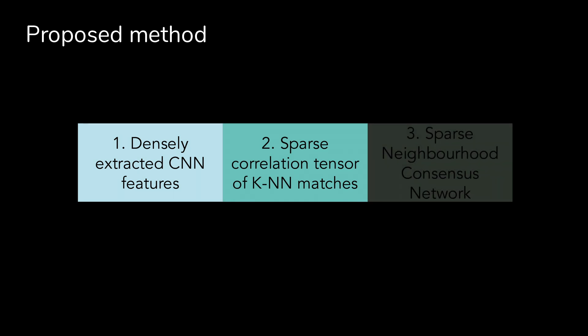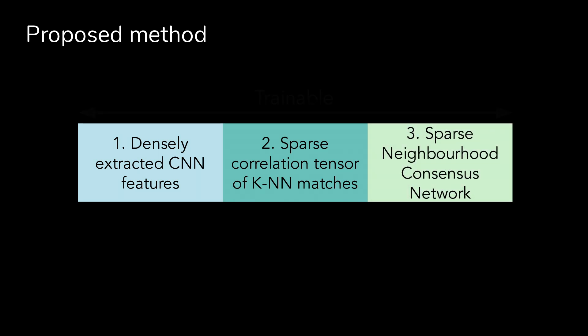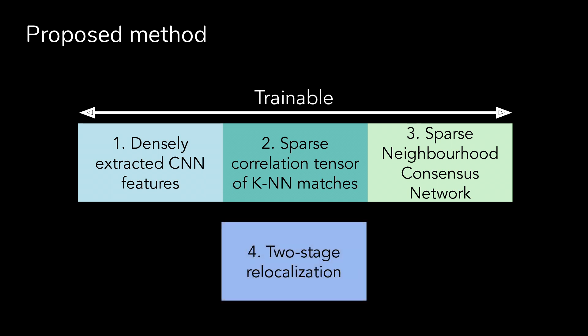In our approach, we follow the same three stages of feature extraction, matching, and match filtering by neighborhood consensus, but where each stage constitutes a module of a trainable architecture. In addition, we propose a two-stage relocalization module, which is used to improve the localization accuracy of the obtained matches. These four stages will now be presented in detail.